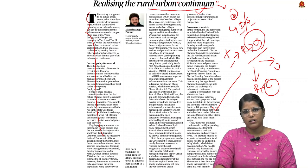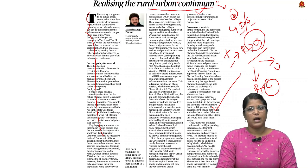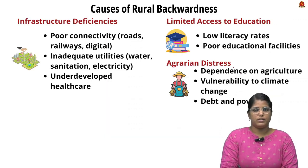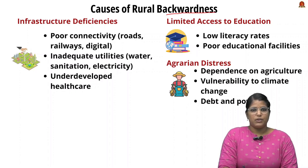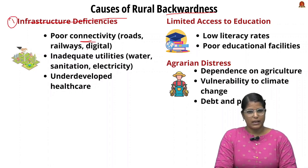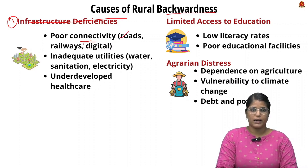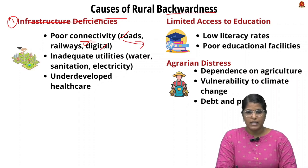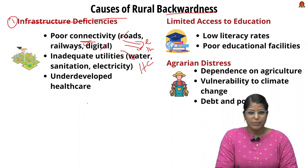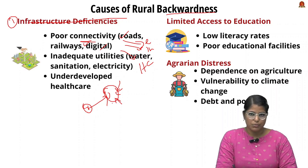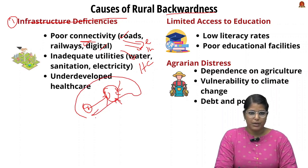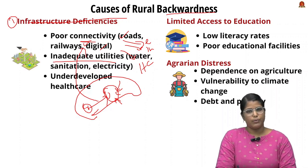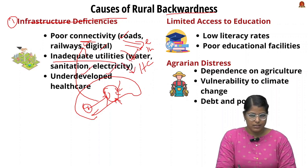Let us examine the causes of rural backwardness from the mains perspective. The first important cause is infrastructure deficiency. When an area lacks connectivity through road, railway, and digital networks, it fails to attract educational institutions, industries, or healthcare service providers. This forces rural people to migrate to urban areas to access required services. There is also inadequate utilities in terms of water, sanitation, and electricity, which affects the setting up of industries or innovation.